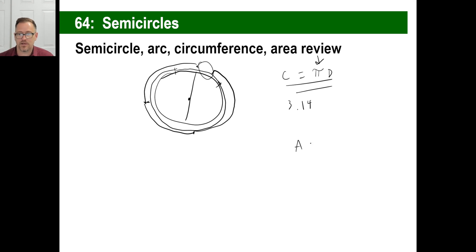The area — make sure you know that the area of a circle is pi times the radius squared. Not two times the radius, but the radius squared. Make sure you know those formulas.